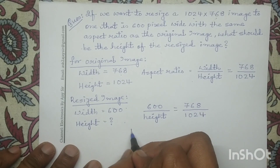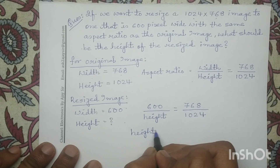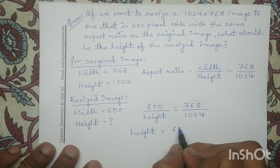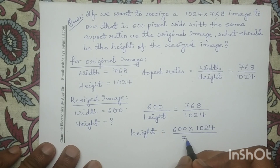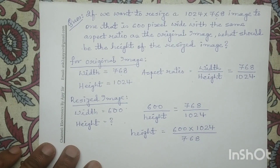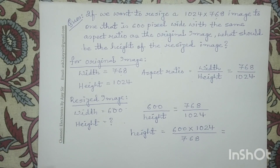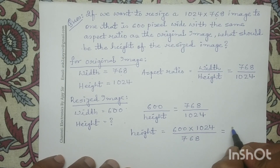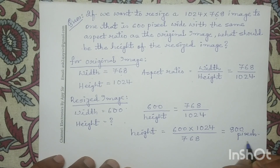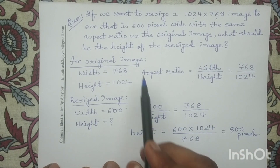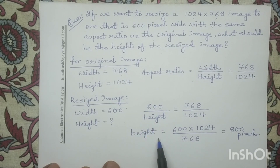On simplification, the equation for height is 600 multiplied by 1024 divided by 768, which on simplification equals 800 pixels. So for this resized image, we have determined the height to be 800 pixels.